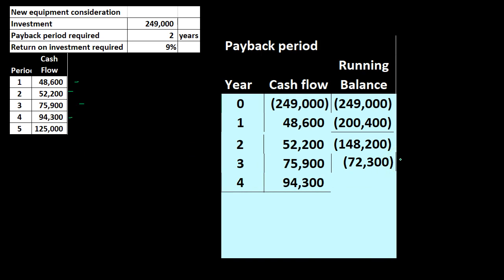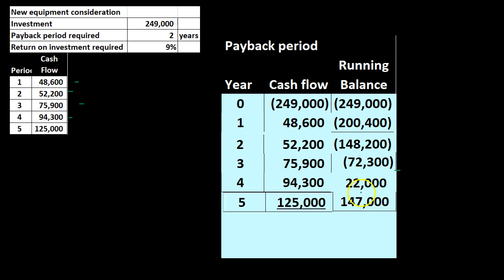We go to year three where we have $75,900. The $148,200 negative plus $75,900 positive gives us $72,300 still negative. Then in year four we have $94,300 — the $72,300 plus $94,300 gives us a positive $22,000. Therefore, somewhere between year three and four — three-point-something — is where we have that break-even period where we flip and the cash flows have paid off the initial investment. In year five we have $125,000, giving us $147,000.